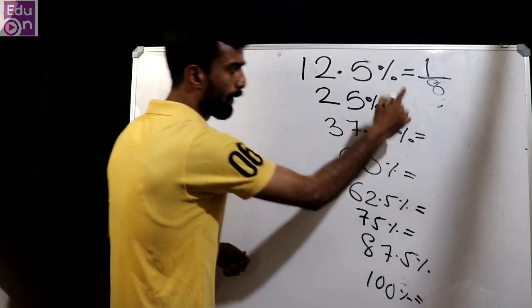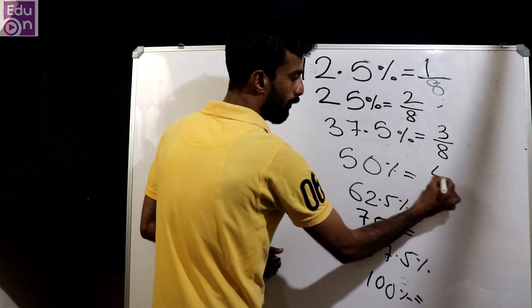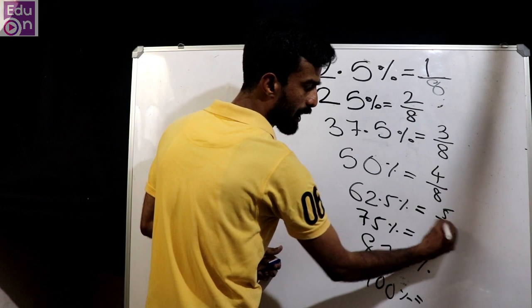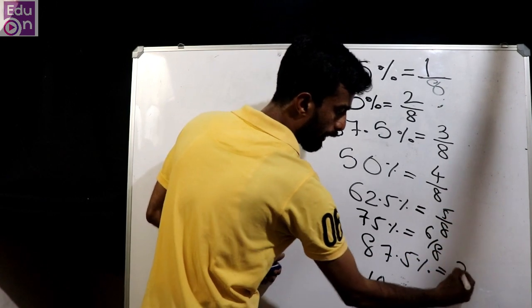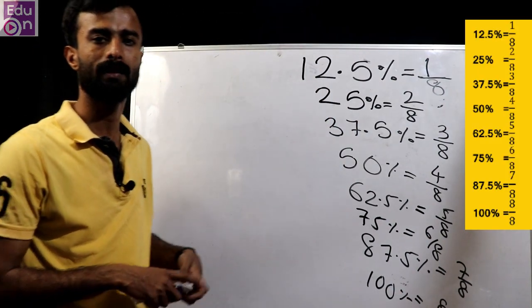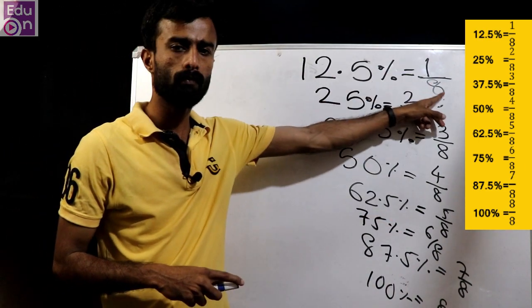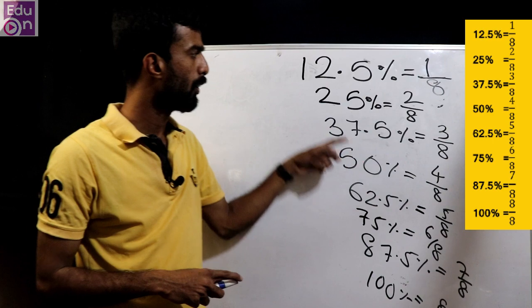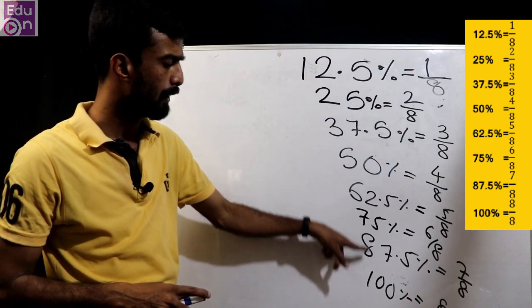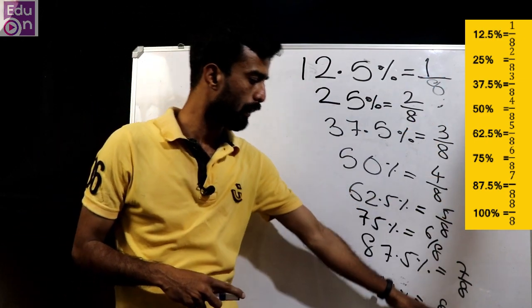The chart continues: 2 by 8, 3 by 8, 4 by 8, 5 by 8, 6 by 8, 8 by 8. So 8 by 8 is simple — 100%. 12.5% equals 1/8, 25% equals 2/8.